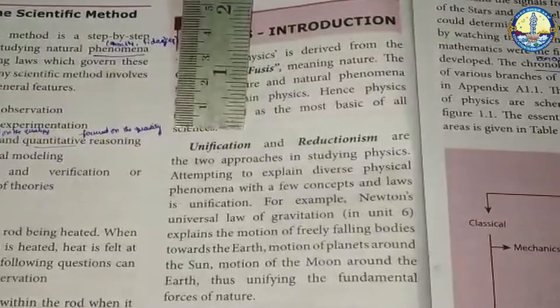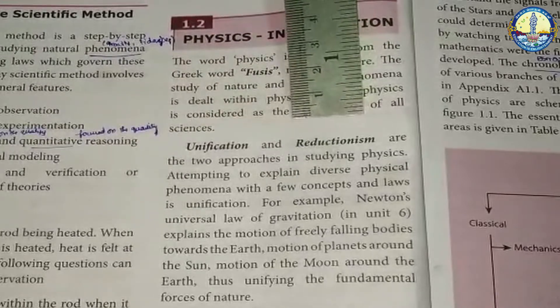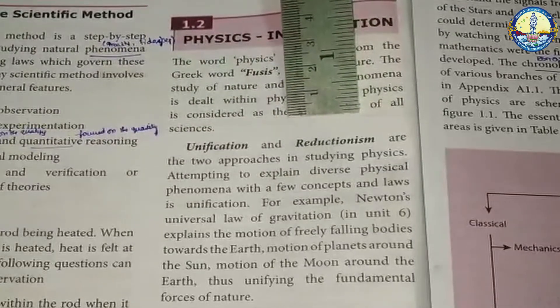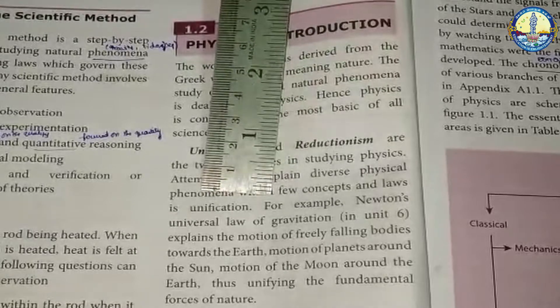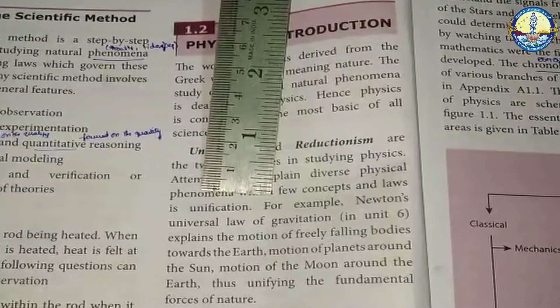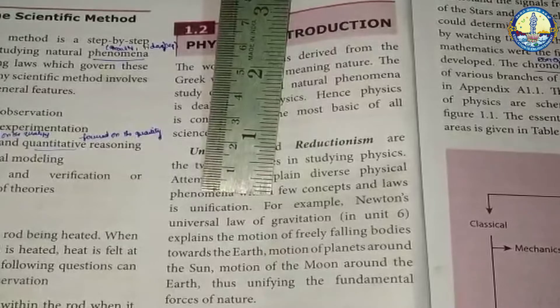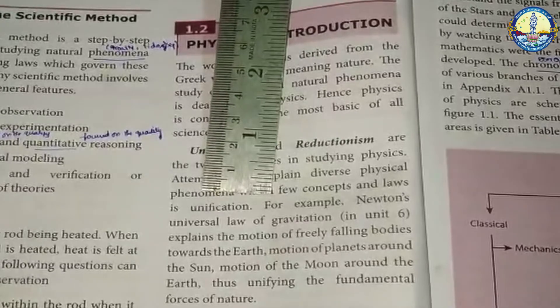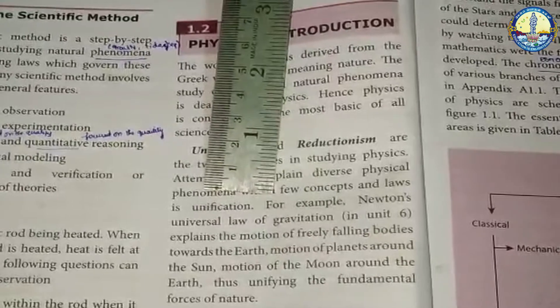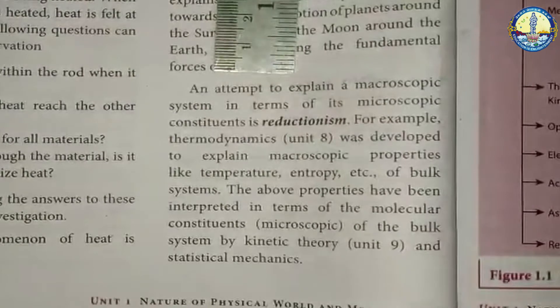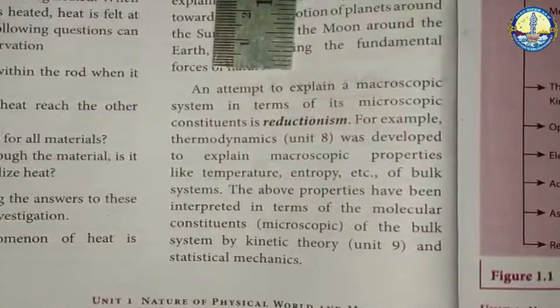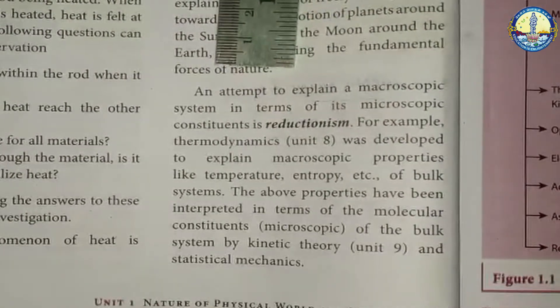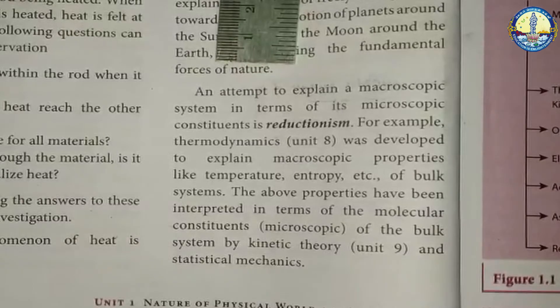Physics uses two important approaches: unification and reductionism. Unification explains diverse physical phenomena through a few concepts and laws. For example, Newton's universal law of gravitation explains freely falling bodies, planetary motion, and the motion of the moon — all as a fundamental force of nature. Reductionism explains macroscopic systems by understanding their microscopic constituents.